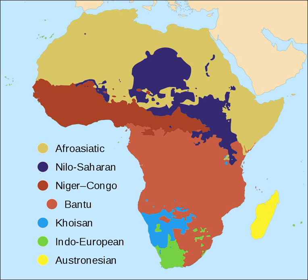Throughout the long multilingual history of the African continent, African languages have been subject to phenomena like language contact, language expansion, language shift and language death. A case in point is the Bantu expansion, in which Bantu-speaking peoples expanded over most of sub-equatorial Africa, displacing Khoisan-speaking peoples from much of Southeast Africa and Southern Africa and other peoples from Central Africa. Another example is the Arabic expansion in the 7th century, which led to the extension of Arabic from its homeland in Asia into much of North Africa and the Horn of Africa. Trade languages are another age-old phenomenon in the African linguistic landscape.